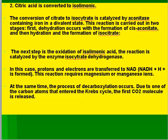The next step is the oxidation of isocitric acid. The reaction is catalyzed by the enzyme isocitrate dehydrogenase, in which protons and electrons are transferred to NAD, forming NADH. This reaction requires magnesium ions. At the same time, decarboxylation occurs due to one of the carbon atoms that entered the Krebs cycle, and the first carbon dioxide molecule is released.